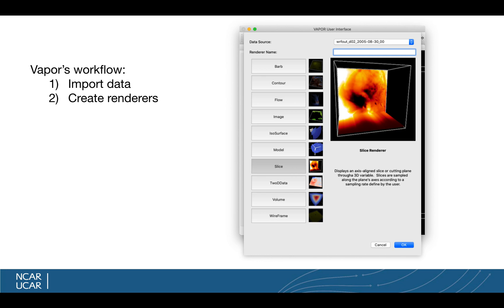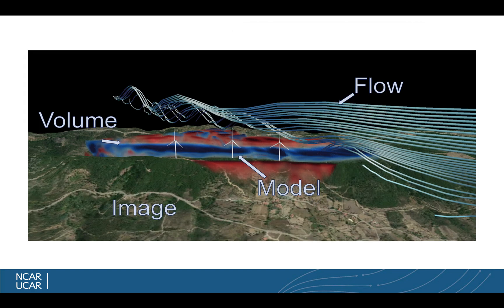I'll also be talking about some basic visualization concepts that apply to applications outside of Vapor, in case you use other platforms like Visit or ParaView. Some of the renderers I'll go through: first, I'll start with a volume renderer, which we can see here in this image in the background — the red and blue cloud. That is the vertical wind component of a WRF LES simulation.